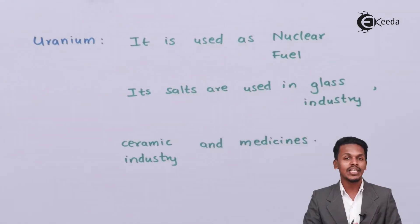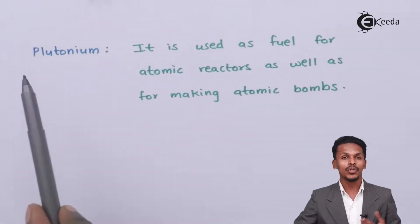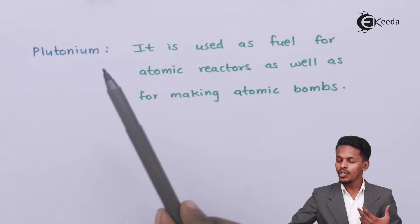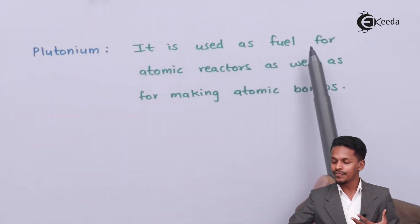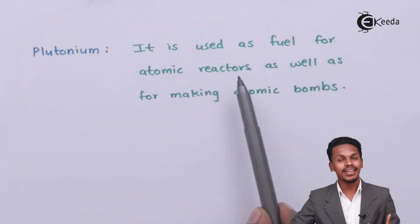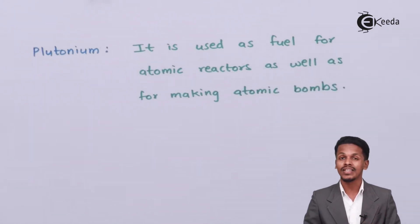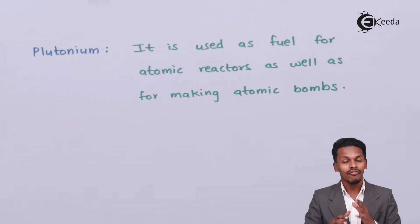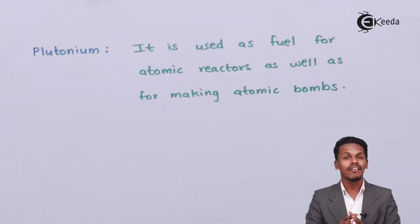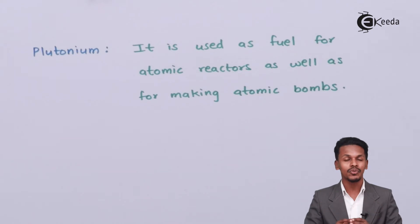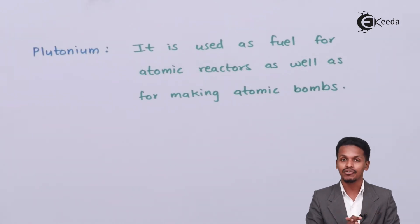Talking about the next one — plutonium. Plutonium is used as fuel for atomic reactors as well as for making atomic bombs. Therefore, all these elements are basically very radioactive and have certain properties that are widely used for creating energy.